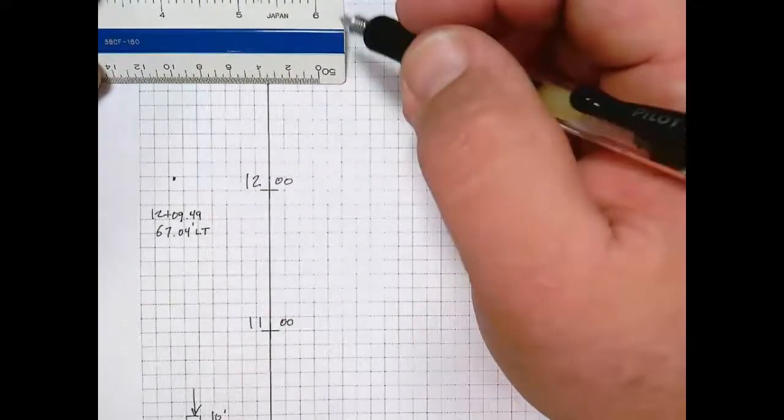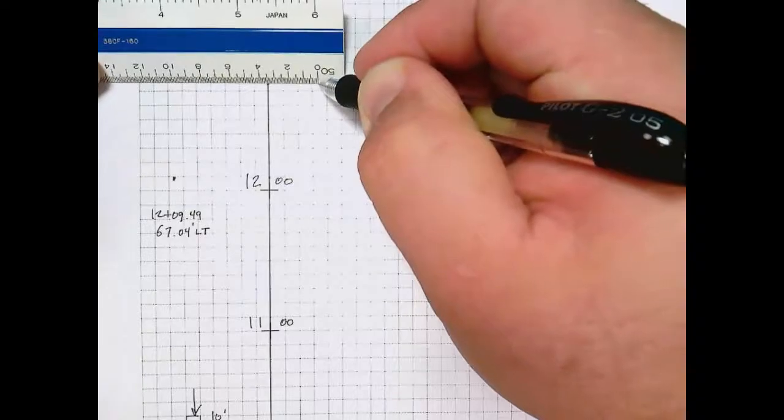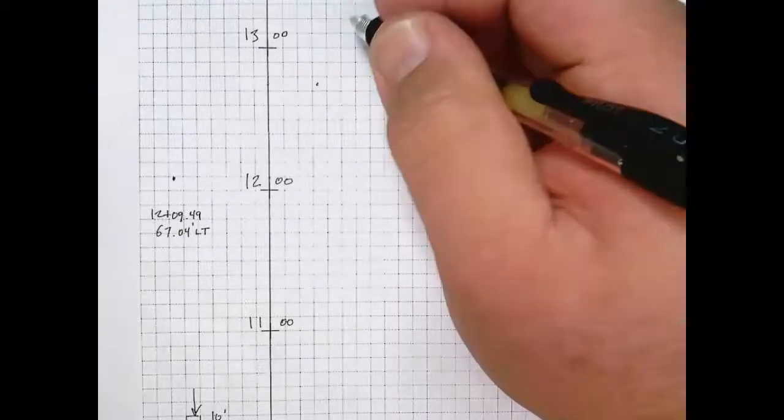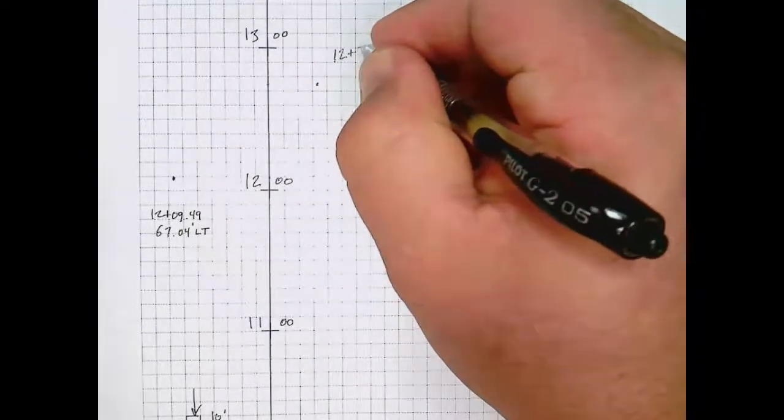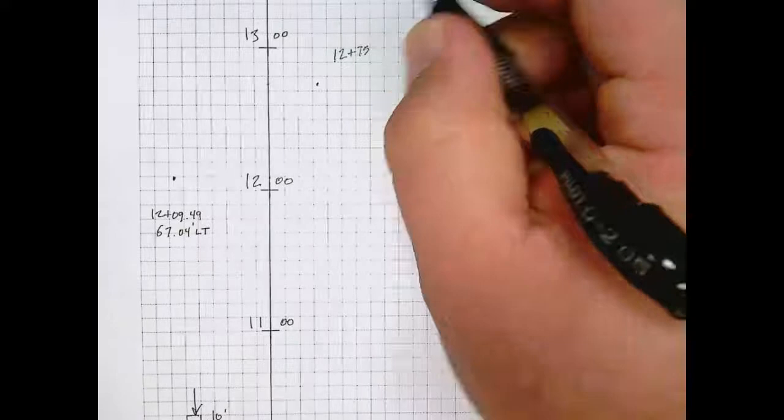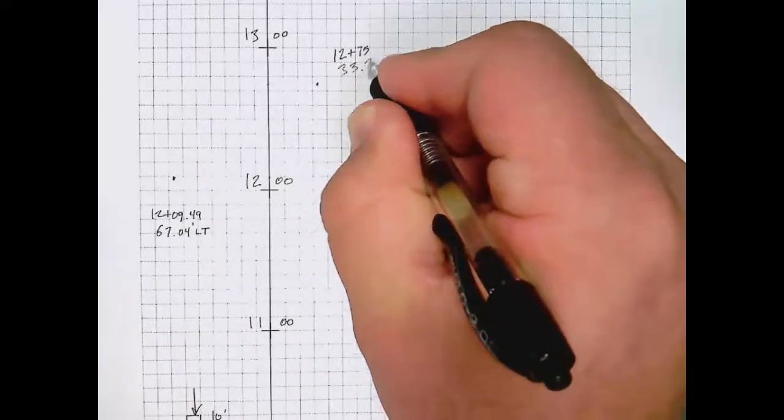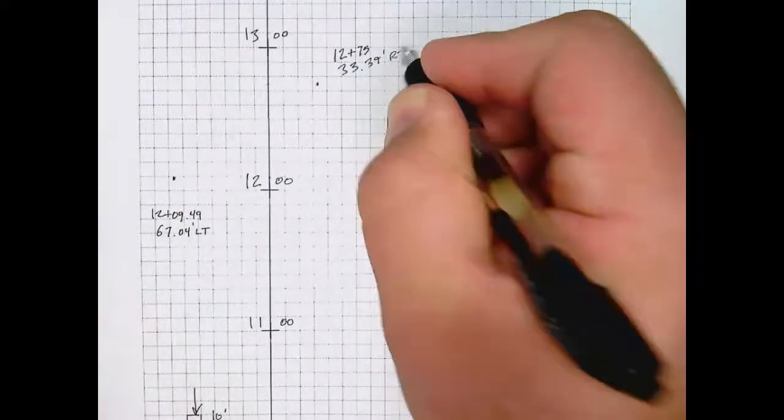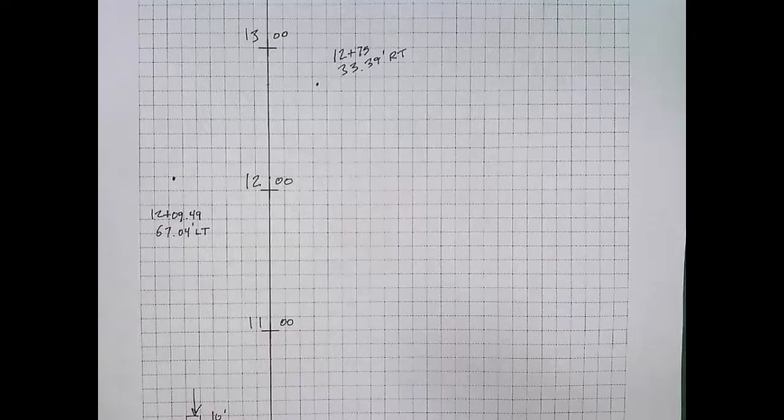So our third point is now going to be to the right of the baseline. I've established my station along the baseline and now I have measured over with my scale and I've plotted point three, which has a station of 12 plus 75.38 with an offset of 33.39 feet right.